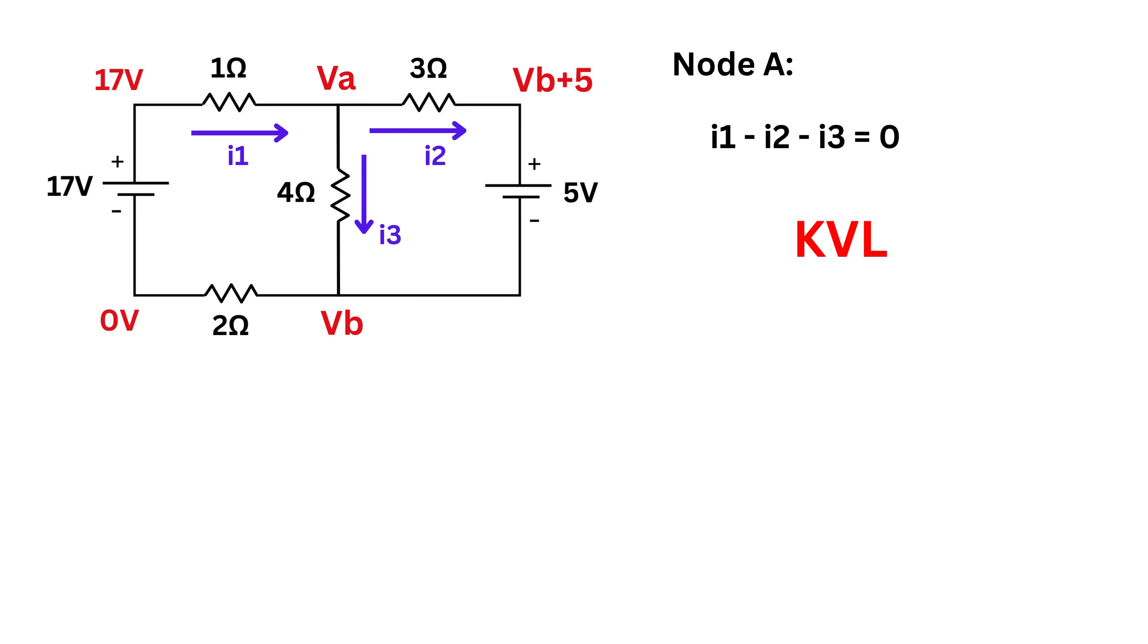Next we will use KVL or the loop rule which says that the sum of all voltages around any closed loop in a circuit is zero. Let's label the loops first. We will call the left loop as Loop 1 and the right loop as Loop 2. Let us start from the bottom left corner of Loop 1 and moving in a clockwise direction, we will add up all the voltage rises and drops we encounter and set their total equal to zero.